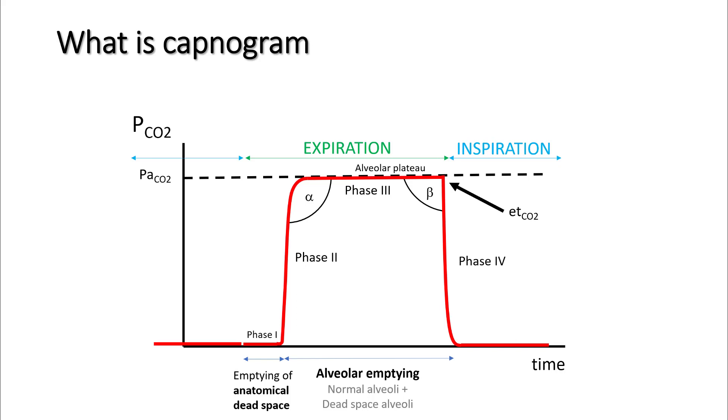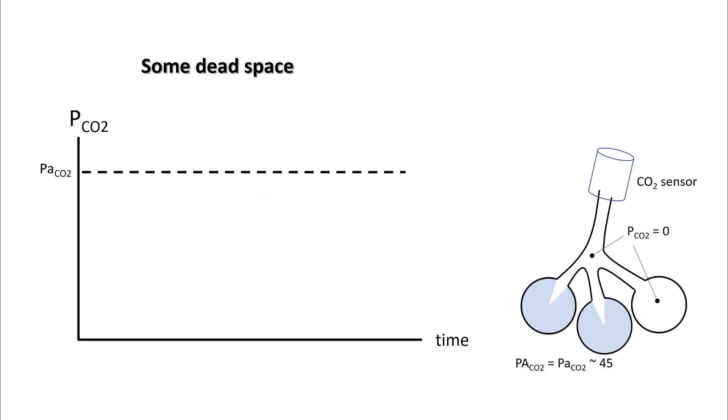Let's add some dead space to the alveoli and see what happens. Now we have one alveolus with dead space. The PCO2, as you know, will be zero. So the first part of exhalation still remains the same as your anatomical dead space comes out.